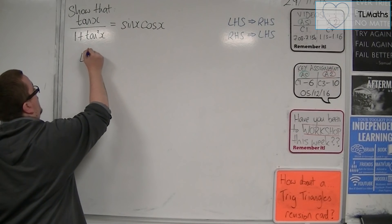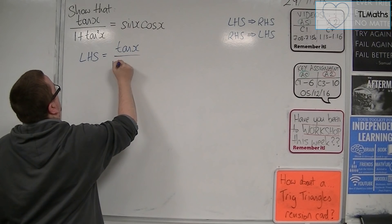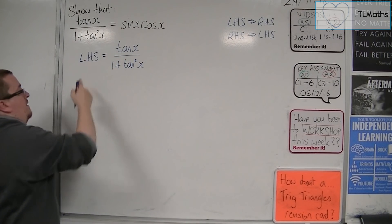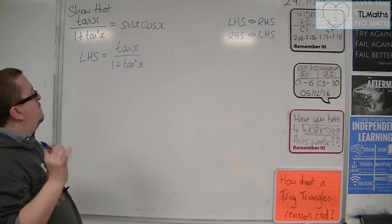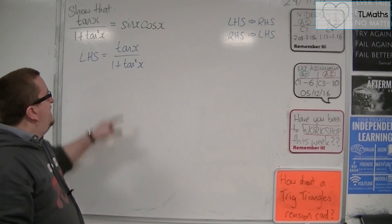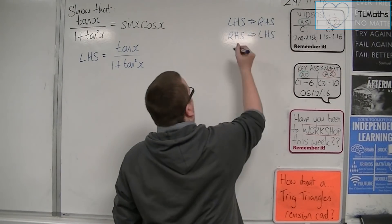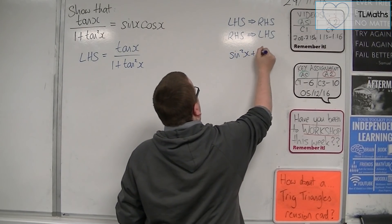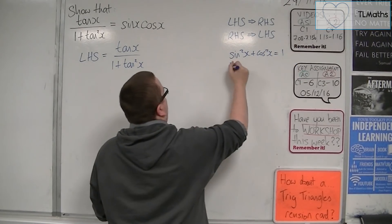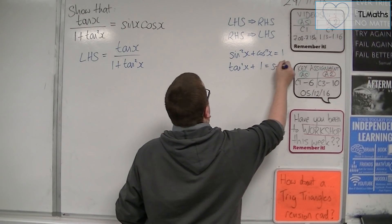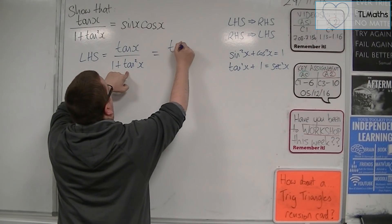So, if I start with the left-hand side, I'm going to write left-hand side equals tan x over 1 plus tan squared. I'm going to make sure that I've written that left-hand side so that it tells the examiner precisely what I'm doing, precisely where I'm starting. Now, I know that there's an identity that has 1 plus tan squared in it. Let's just quickly remind ourselves, starting with sin squared plus cos squared is 1. I can divide through by cos squared to get tan squared plus 1 is sec squared. So, I can replace the denominator here with sec squared.